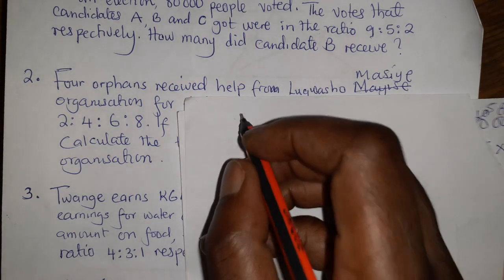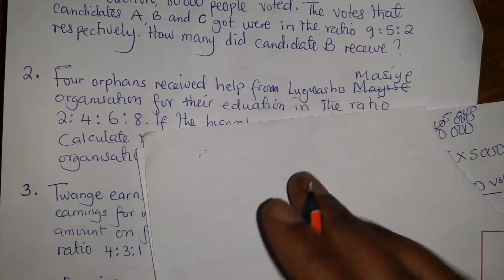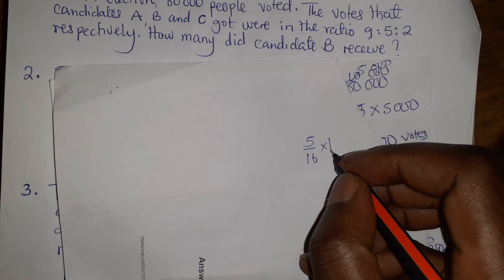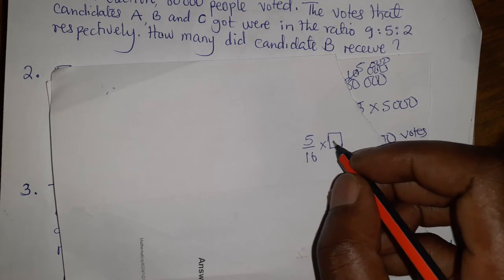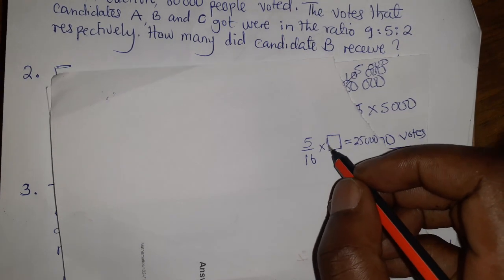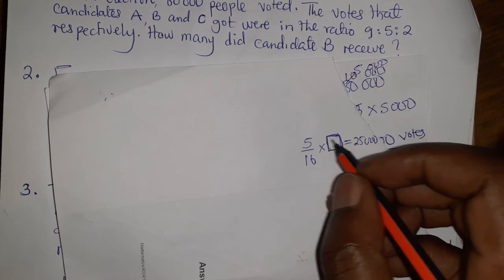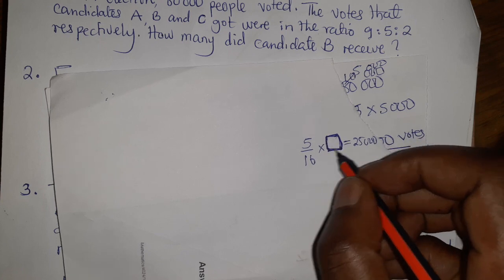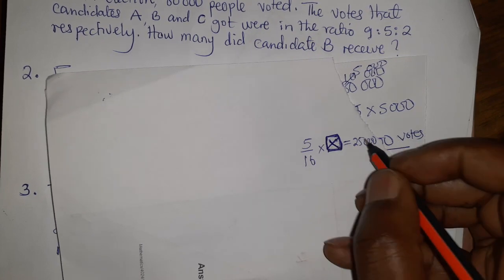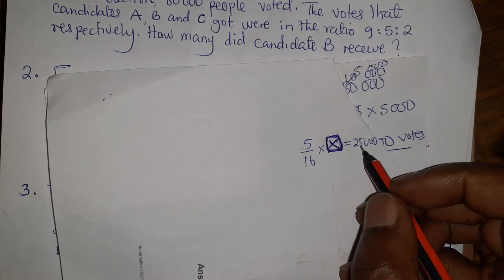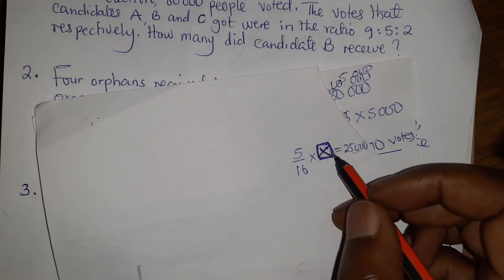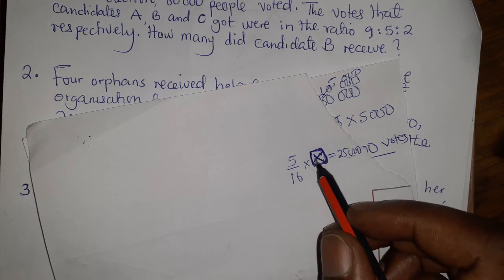Going back to the first question, we said it was 5 over 16 multiplied by the total, and we got 25,000 — the total number of votes was what we placed there. In this case, this total is what we don't know. It's like if the first question told us candidate B got 25,000 votes — find the total. So we are looking for that total amount here.